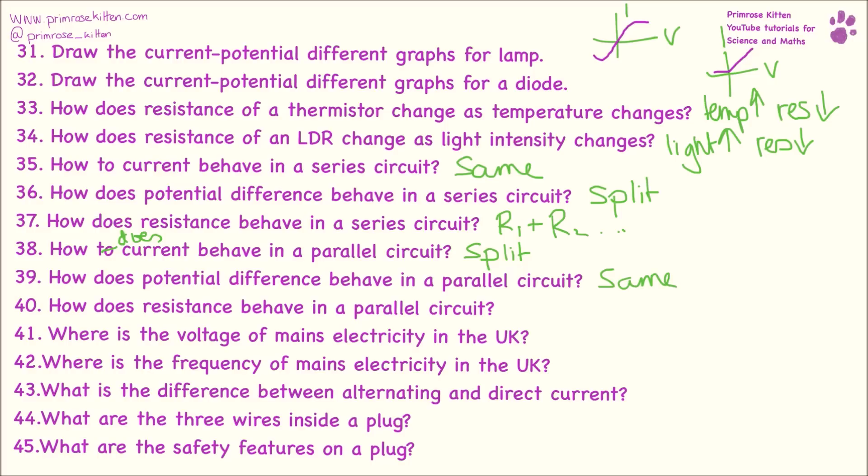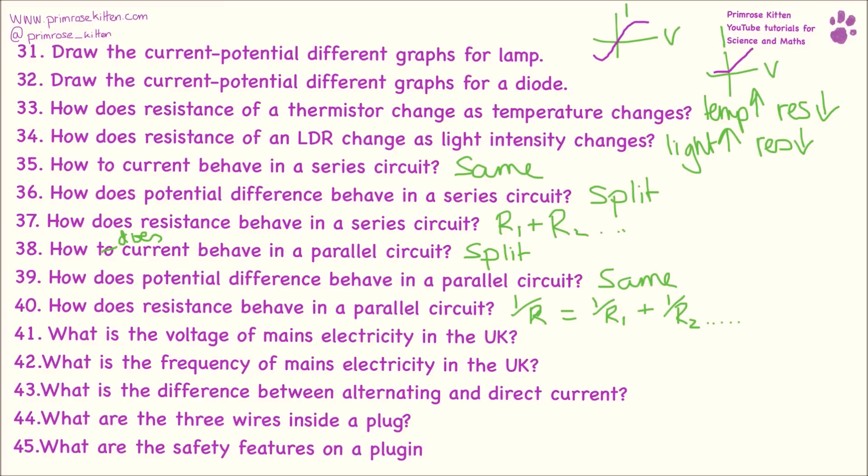Slightly different, the resistance in a parallel circuit. If you want to find the one over the total resistance, you need to do one over each of the individual resistors added together. What is the voltage of mains electricity in the UK? That is 230 volts. The frequency is 50 hertz. What is the difference between alternating and direct current? Direct current just goes in one direction. Whereas alternating current switches back and forth going in different directions.